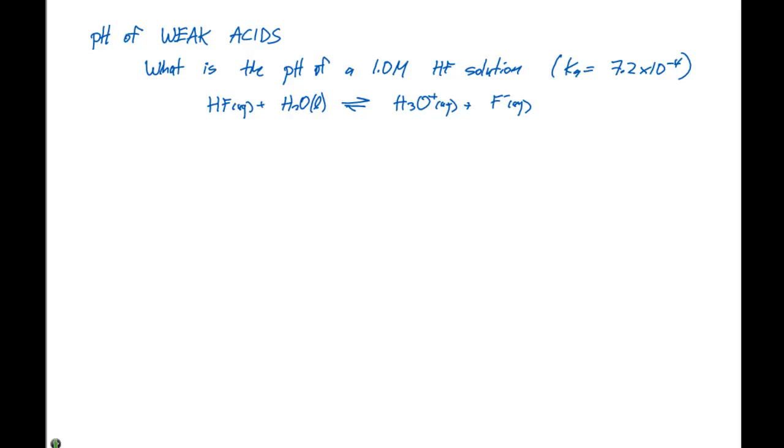Here we know that the concentration of the HF is not going to equal the concentration of H plus ions in solution, and we're going to have to use the Ka in order to determine this. So just like we did in the equilibrium chapter, we're going to set up an ICE table here indicating our concentrations.